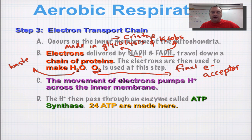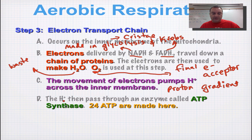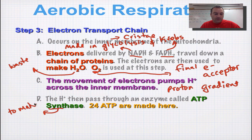There are movements of electrons across a membrane, and we're going to learn about something called a proton gradient. Remember we talked about diffusion and osmosis in a previous chapter? Those concepts come into play here. A proton and a hydrogen ion are the exact same thing. The hydrogen ions are going to pass through an enzyme called ATP synthase. Remember, 'synth' — that part of the word — means to make. So basically, this is an enzyme that makes ATP.